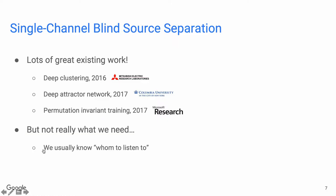There are already lots of great work on single-channel blind separation — for example, deep clustering, deep attractor network, and permutation invariant training. But these are not really what we need, because in our cases we usually know whom to listen to.